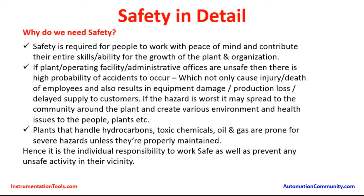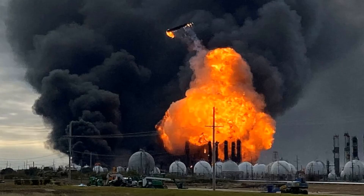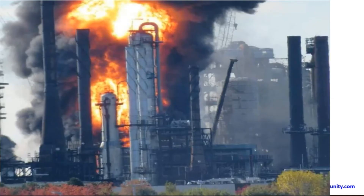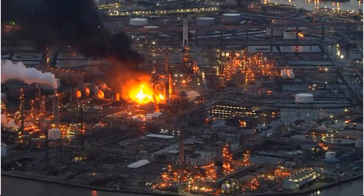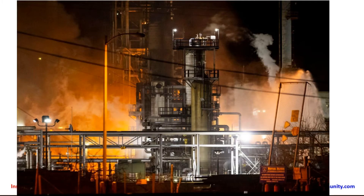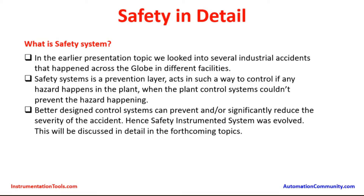For example, if a fire extinguisher is not kept in place and a small electrical fire occurs, it can cause major damage to the office, injuring many people. Similarly, in the plant, there are oil ponds around, and people should not smoke near them. Plants have specific designated smoking areas. If someone brings a cigarette into an unauthorized area of the plant, there is a high chance of a fire occurring.